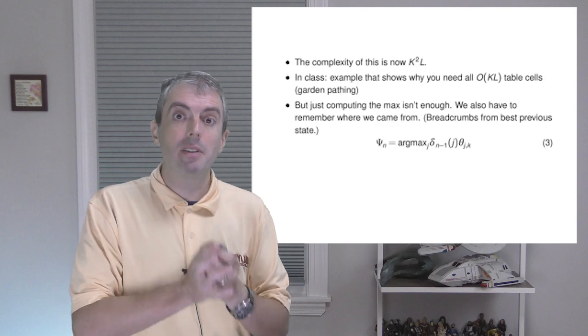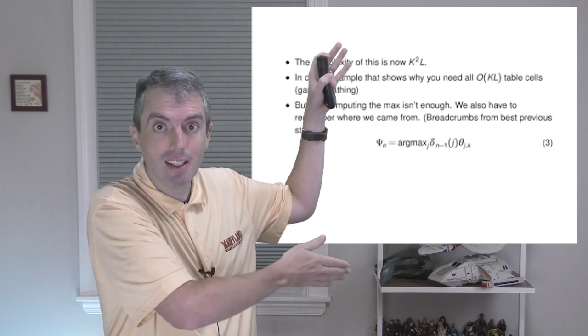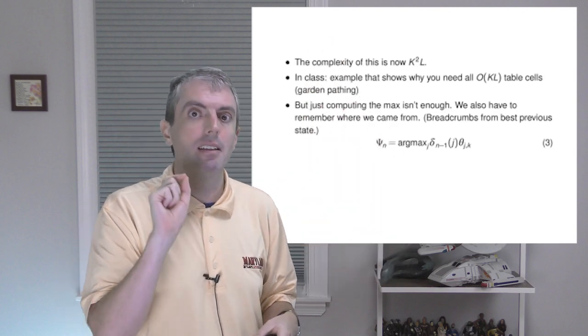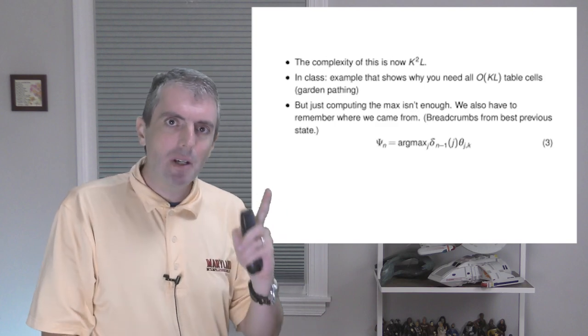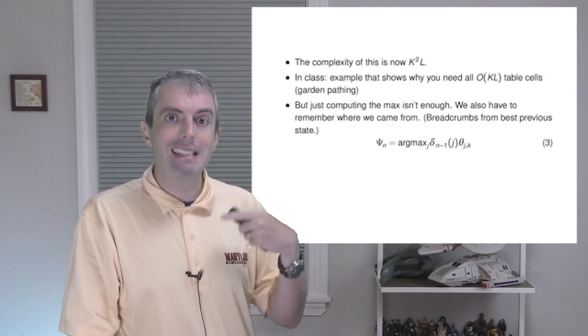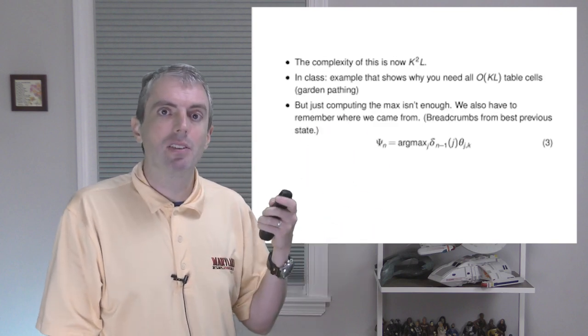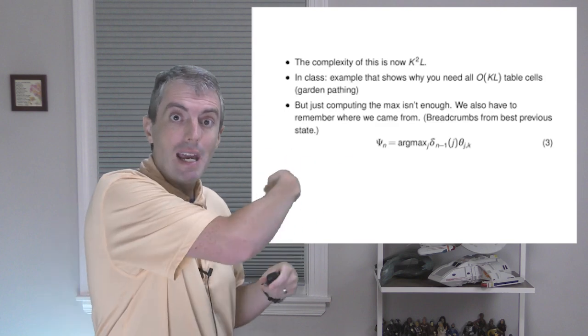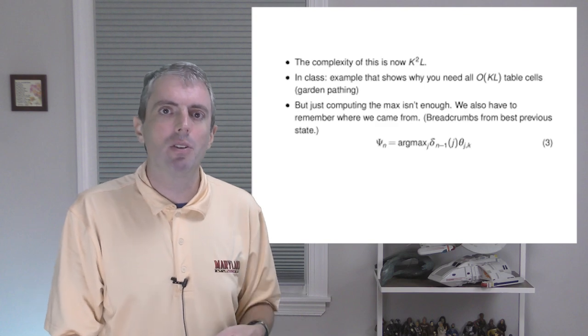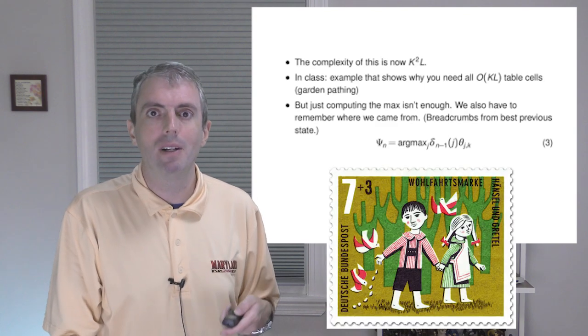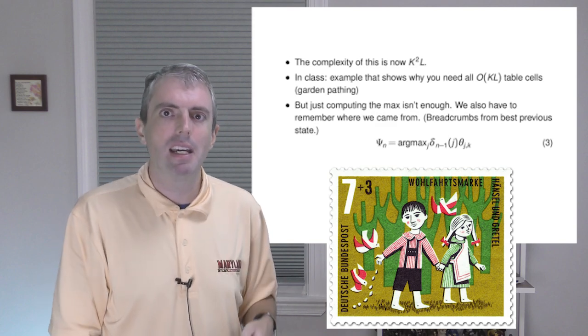The complexity of this algorithm is k squared l. It's k squared because we have a table of size k times l, and to fill each of those little cells we need to look at k previous states. But computing the maximum isn't enough. You also need to remember the best state that you came from. This is necessary so that you can follow the pointers back to rebuild the best part-of-speech tags. Thus, this is often referred to as breadcrumbs, a reference to Hansel and Gretel retracing their steps in the forest.